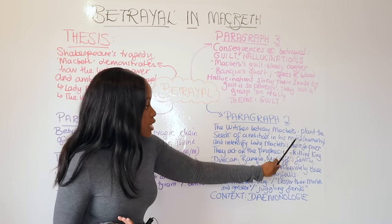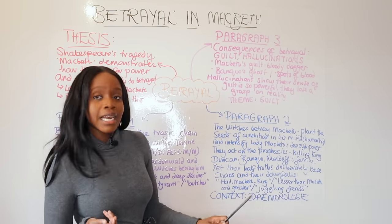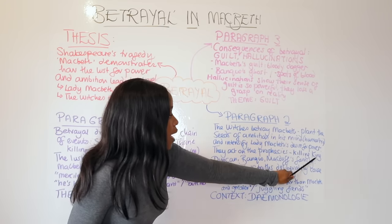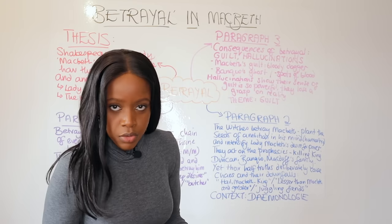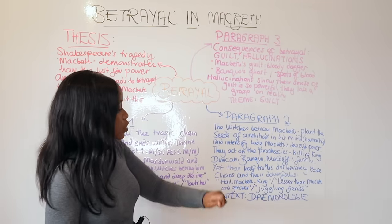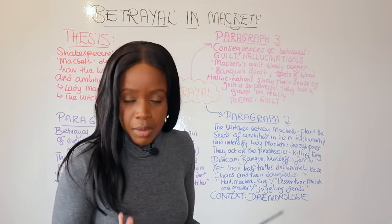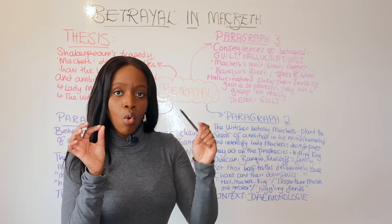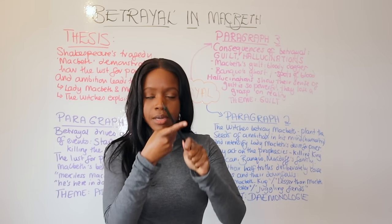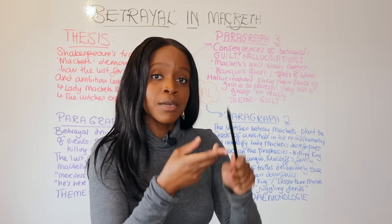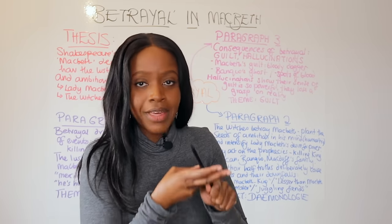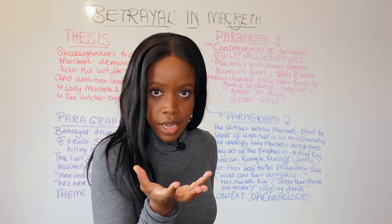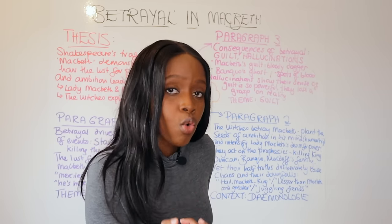Once the witches plant these seeds, both Macbeth and Lady Macbeth act on the prophecies. Macbeth kills King Duncan, then hires murderers to kill Banquo — his best friend — and also hires murderers to have Macduff's family killed. All of this is a consequence of the witches prophesying that he will be king, and also because the witches in that fateful scene warn him to 'beware Macduff,' which causes him to have Macduff's family killed.